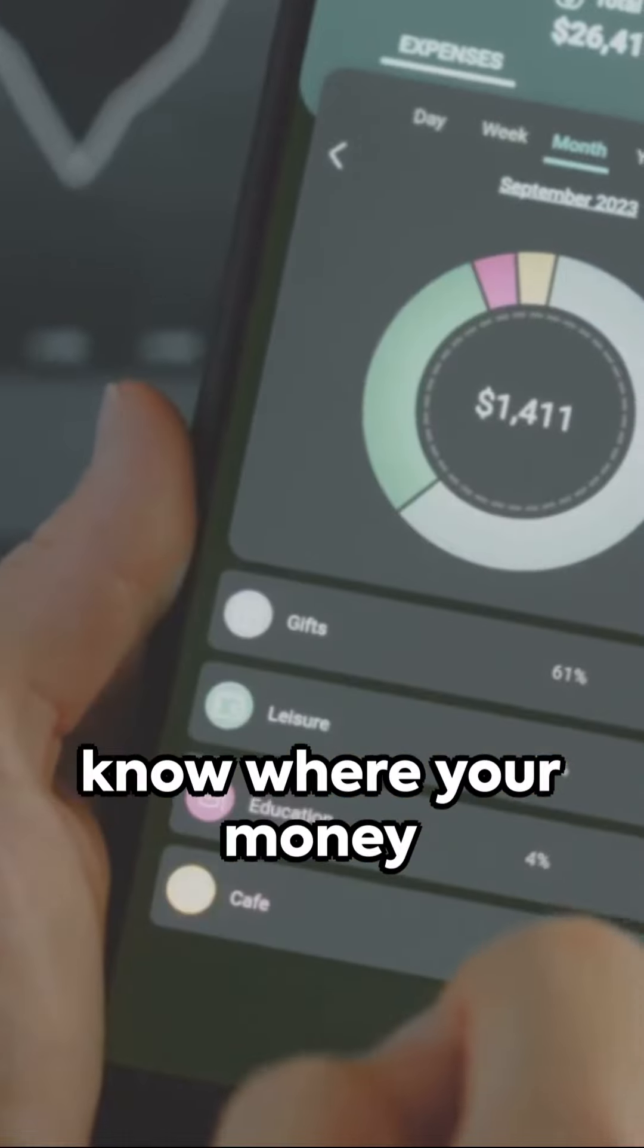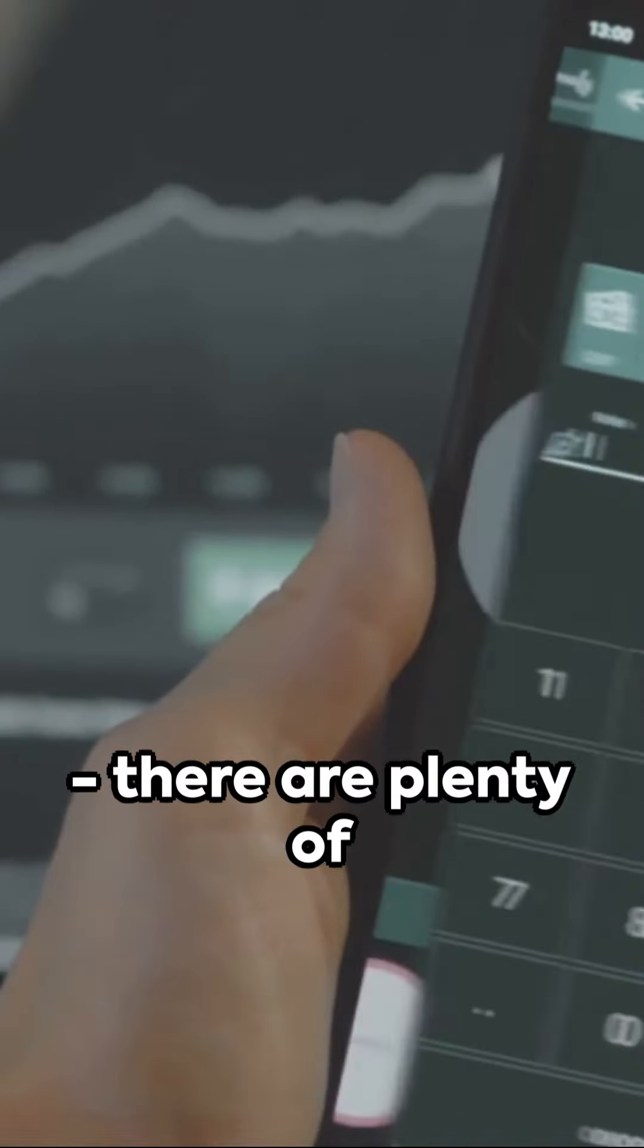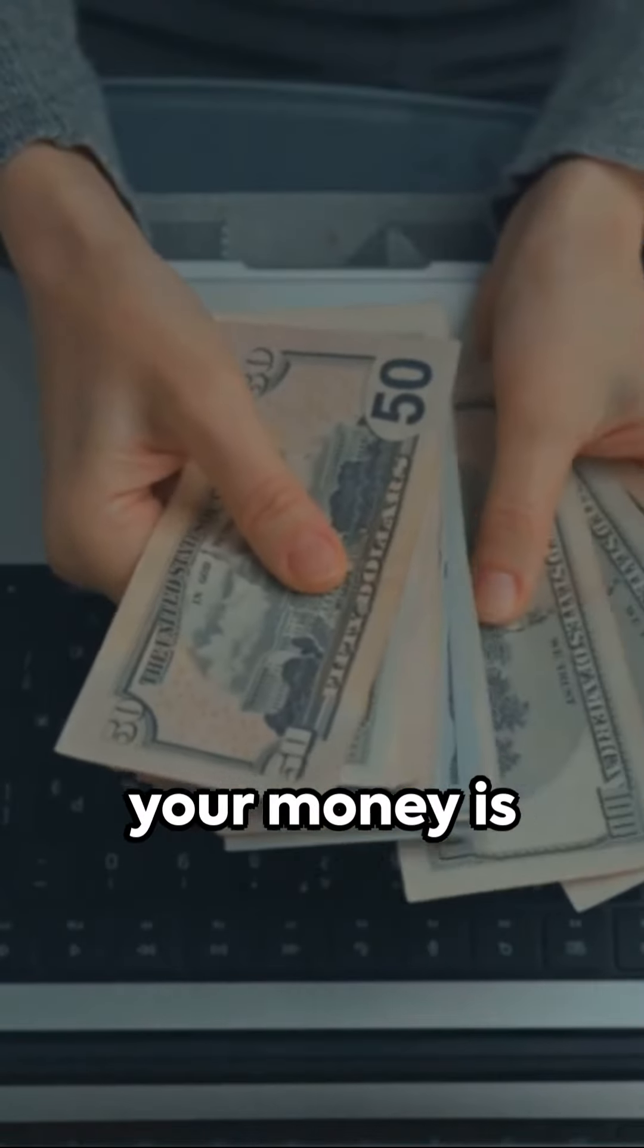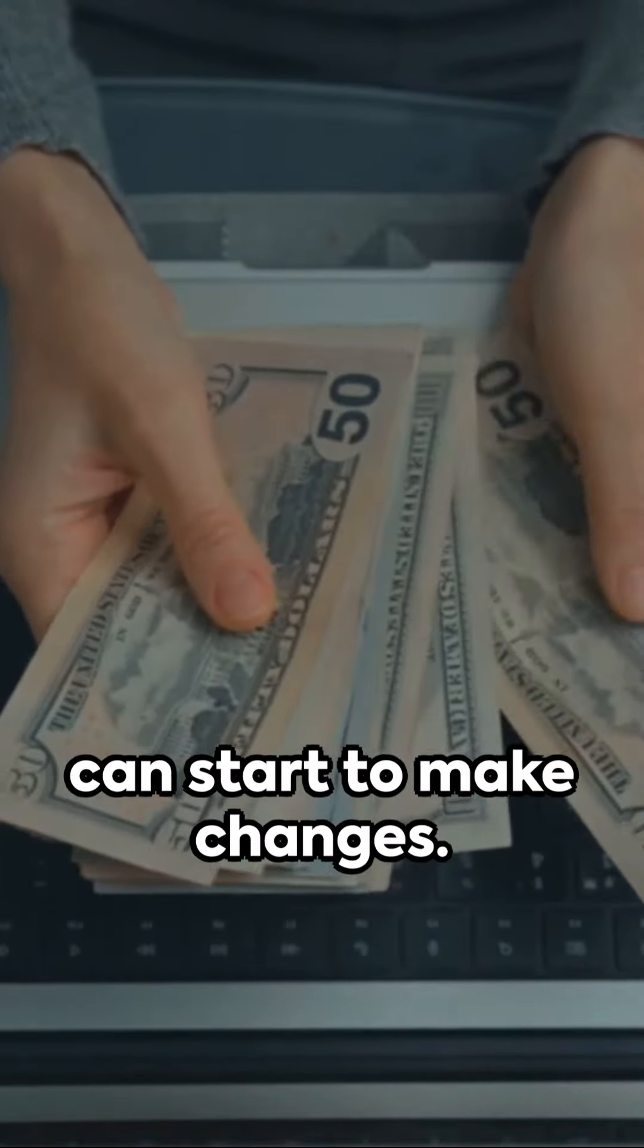First, you need to know where your money is going. Track your expenses. There are plenty of apps out there to help with this. Once you know where your money is disappearing to, you can start to make changes.